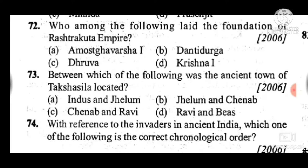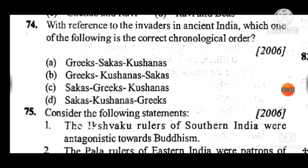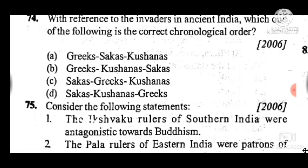Question 72: Who among the following laid the foundation of the Rashtrakuta empire? Answer is B, Dantidurga. Question 73: Between which of the following was the ancient town of Taxila located? Answer is A, between the Indus and Jhelum. Question 74: With reference to invaders in ancient India, the correct chronological order is A — Greeks, Shakas, and Kushanas.